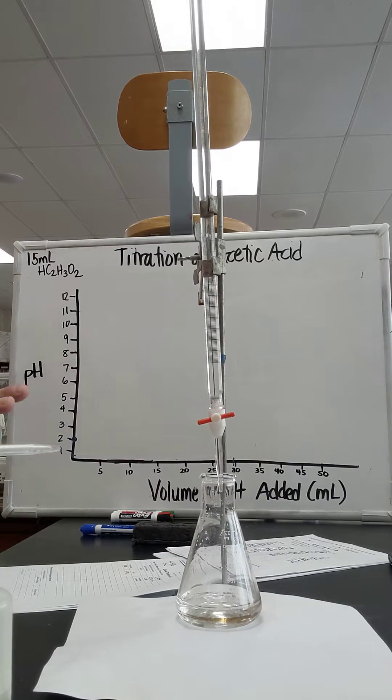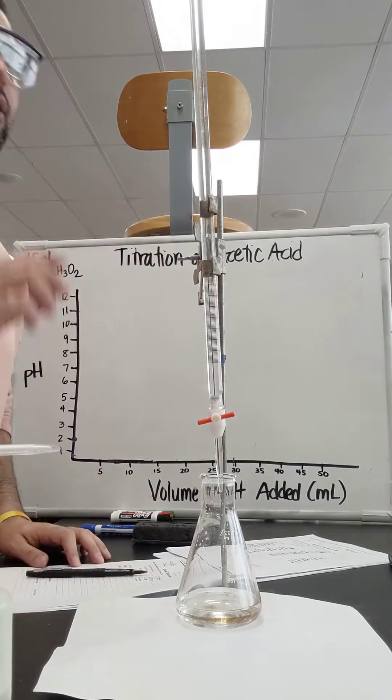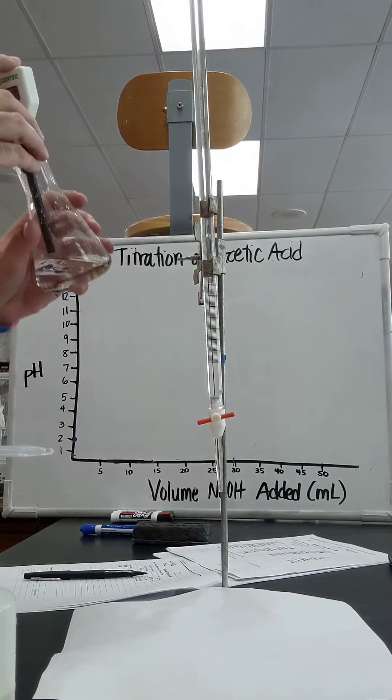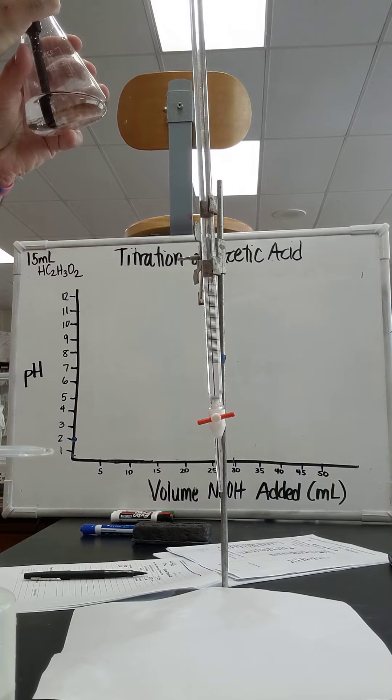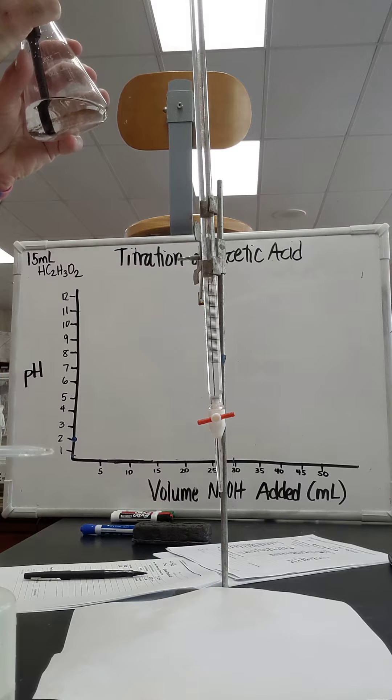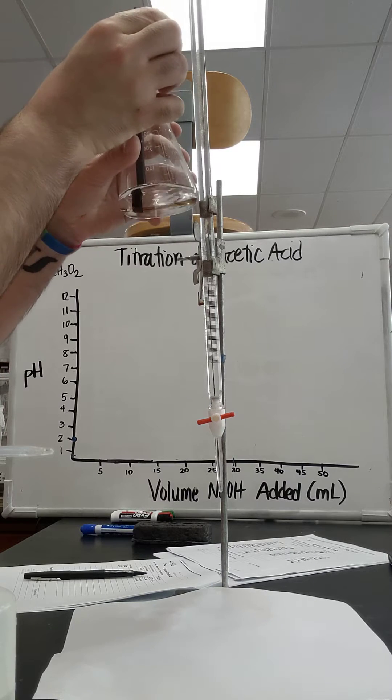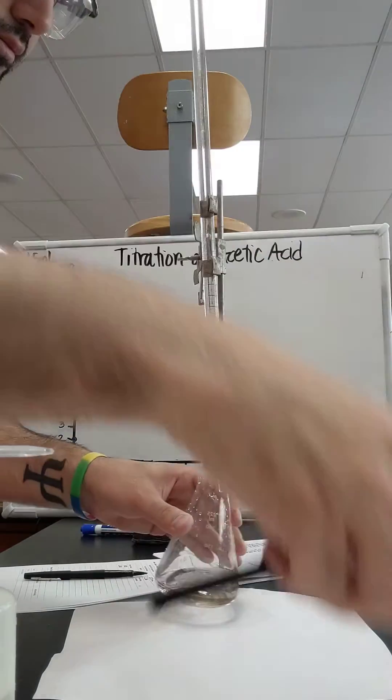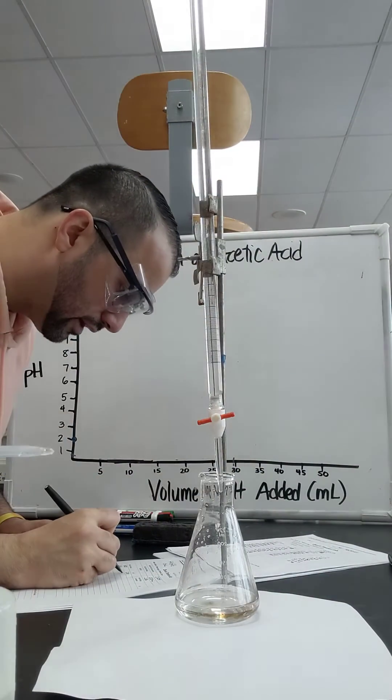Wow, 2 milliliters and I saw a lot of pink color. I have it exactly at the 2 milliliter mark. Now I'm going to quickly record the pH. Looks like the pH is 3.0. Oh my, that's jumping. It keeps on going. Looks like the pH is about 3.96. So 3.96 is the pH.